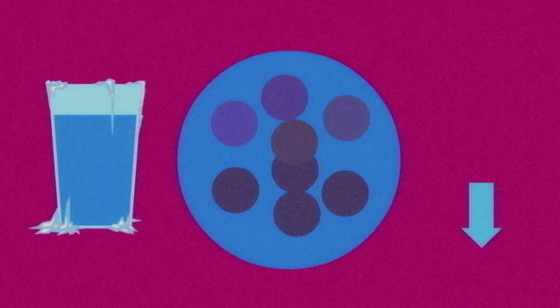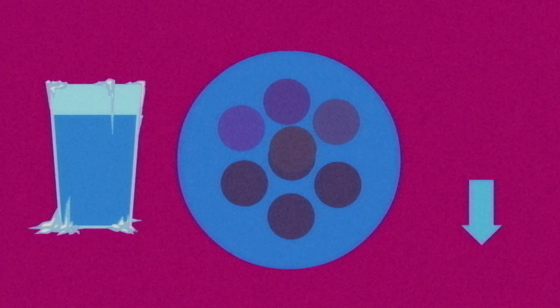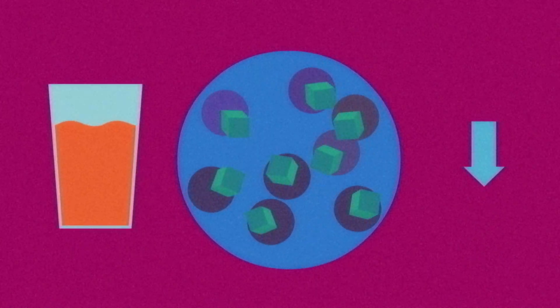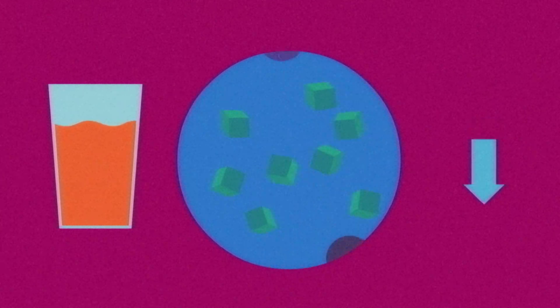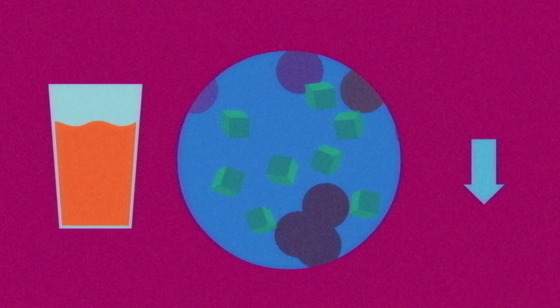When a liquid freezes, the molecules slow down enough for their attractive forces to act on each other, arranging themselves into a crystal structure. But the presence of solute particles gets in the way of these attractions, requiring a solution to be cooled down further before the arrangement can occur.